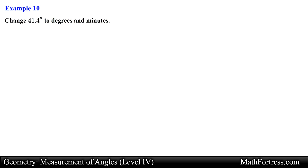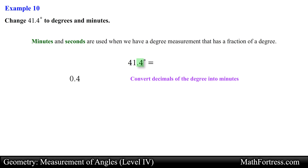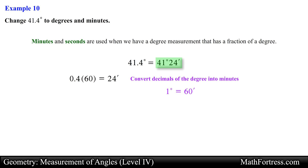Now let's go over problems that require us to find parts of a degree. Change 41.4 degrees to degrees and minutes. We are asked to convert a degree measurement to degrees and minutes. Minutes and seconds are used when we have a degree measurement that has a fraction of a degree. Since there are 60 minutes in one degree, we multiply 0.4 by 60 and obtain 24 minutes. So this angle can be written as 41 degrees 24 minutes.